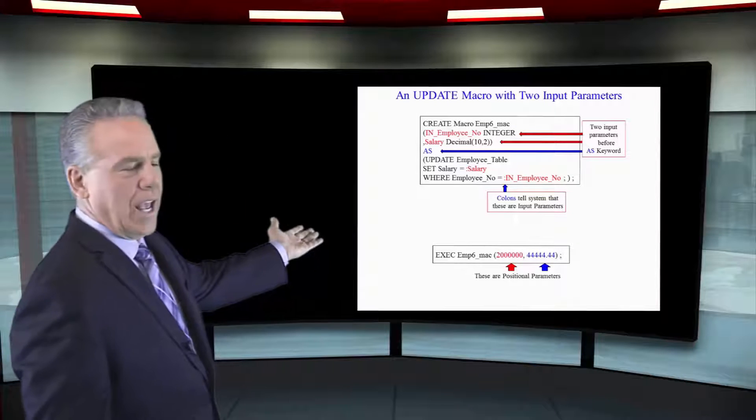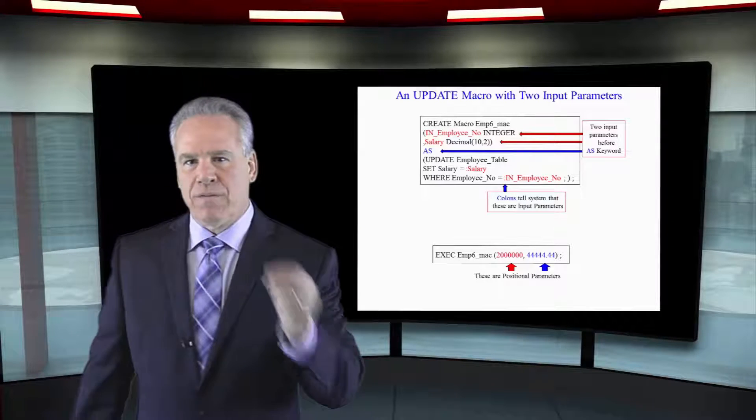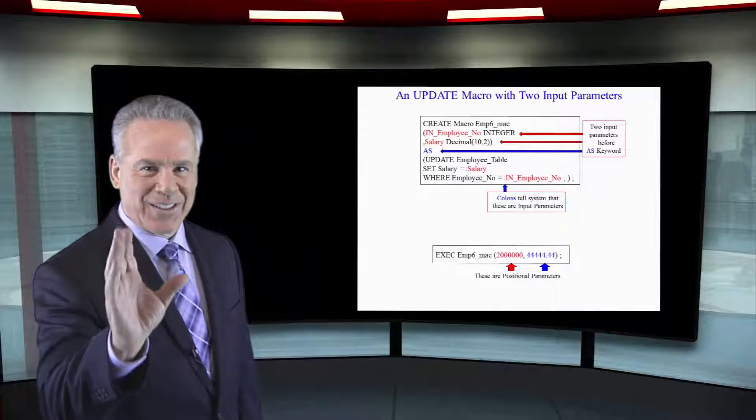Of course when I execute the macro I'm going to tell it it's employee two million and they're making 4444.44 as their salary.